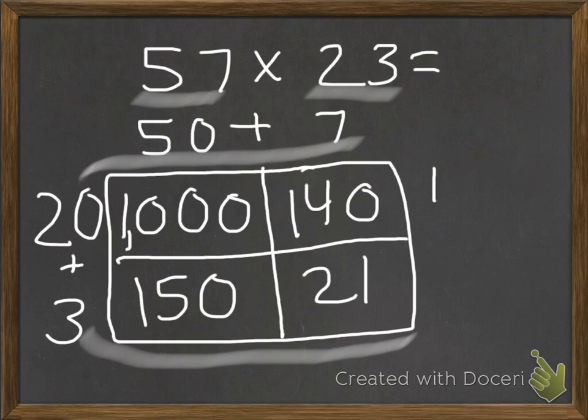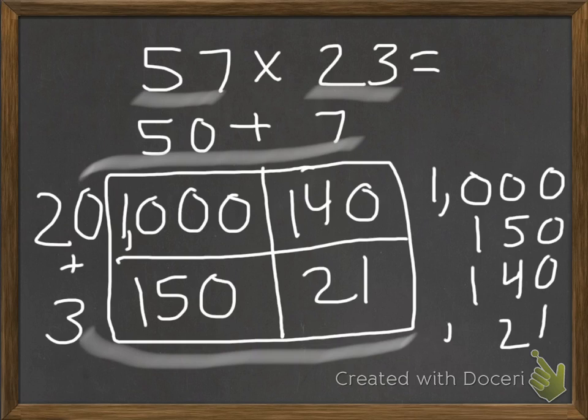Now, what I like to do is I like to take these numbers and line them up. I'm going to put my 1,000, then my 150, then my 140, and then my 21, and then I'm going to add them all. Make sure the place values are lined up correctly. There's the 1, and this is an 11, so I'm going to carry my 1. When I go 5 plus 4 plus 2 is 11, and then I add those together, I get my 3. My answer is 1,311.